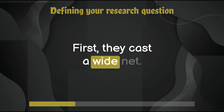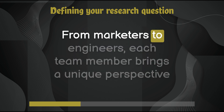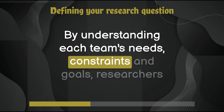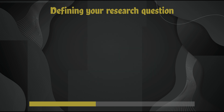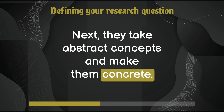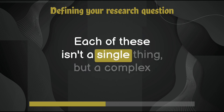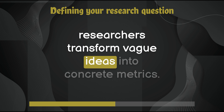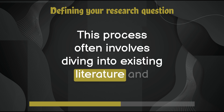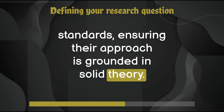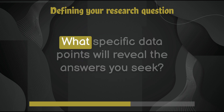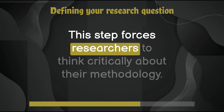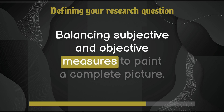To avoid this trap, savvy researchers employ a toolkit of techniques. First, they cast a wide net, consulting stakeholders across the organization — from marketers to engineers — each bringing a unique perspective. Next, they take abstract concepts like quality, usability, and user satisfaction and make them concrete. By breaking these down into measurable components, researchers transform vague ideas into concrete metrics, grounding their approach in existing literature and standards. The focus then shifts to measurement: what specific data points will reveal the answers you seek, and how will you differentiate between concepts or levels of variables? This forces researchers to think critically about methodology, balancing subjective and objective measures.